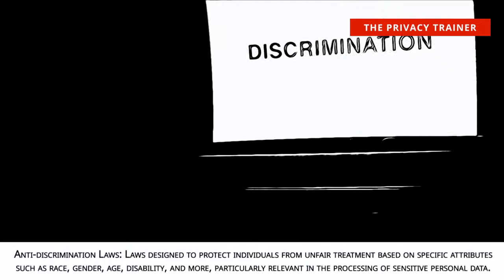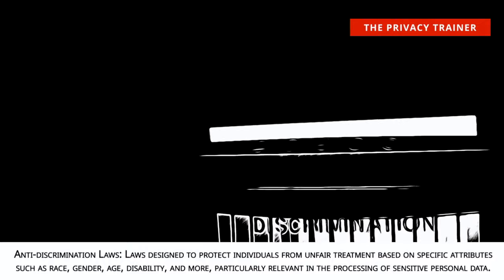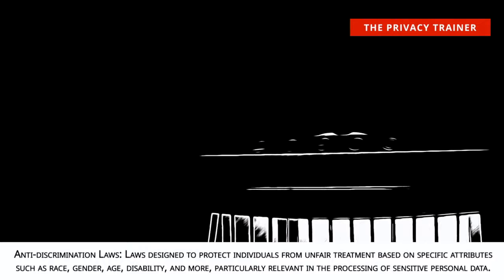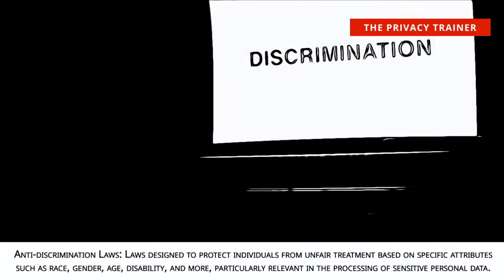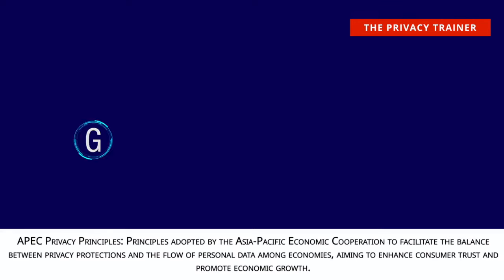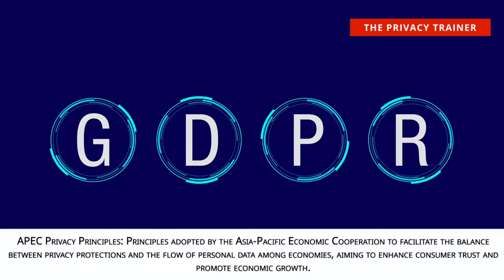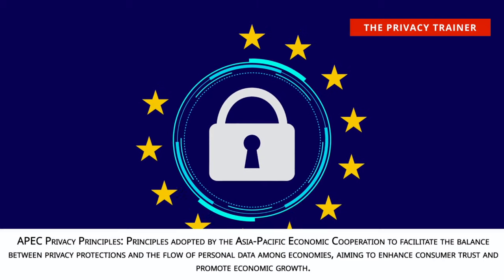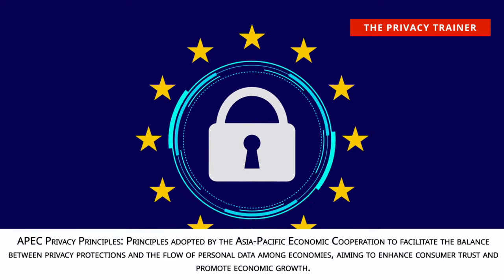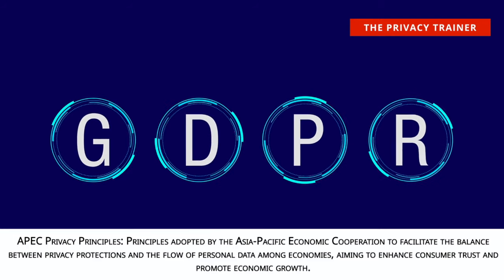Anti-discrimination laws. Laws designed to protect individuals from unfair treatment based on specific attributes such as race, gender, age, disability, and more, particularly relevant in the processing of sensitive personal data. APEC Privacy Principles. Principles adopted by the Asia-Pacific Economic Cooperation to facilitate the balance between privacy protections and the flow of personal data among economies, aiming to enhance consumer trust and promote economic growth.